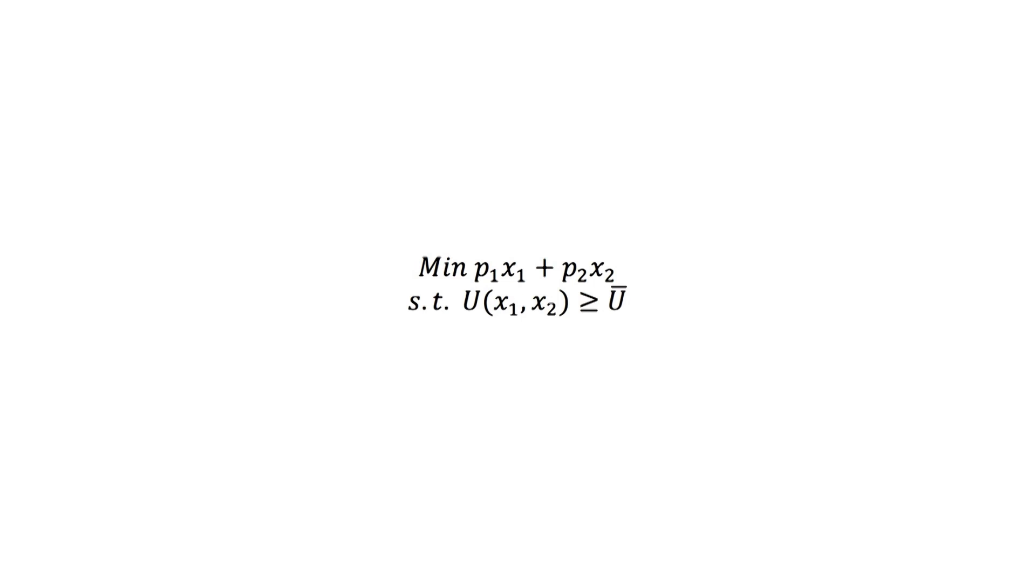In this new equation we see that we try to minimize the cost of buying goods X1 and X2 such that we achieve an amount of utility which is at least as big as the amount of utility we seek, here U-bar. This second formula is commonly used in order to facilitate its graphical representation.